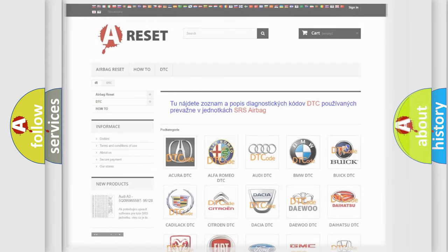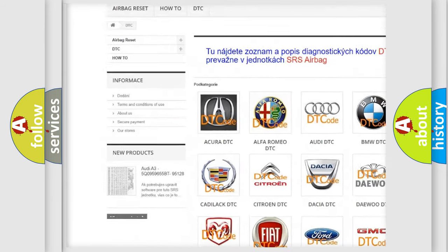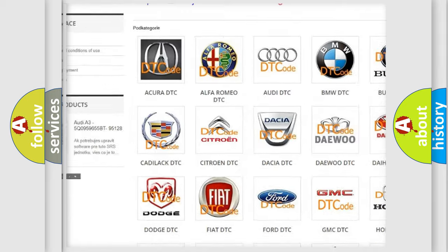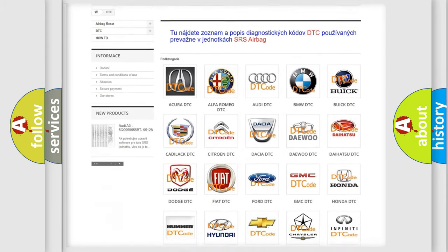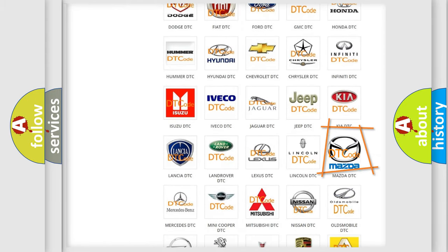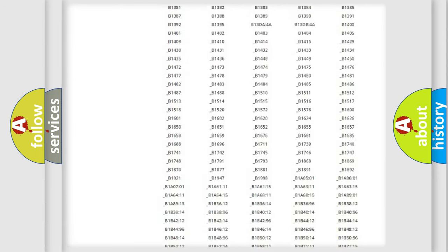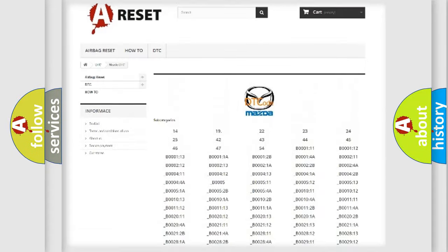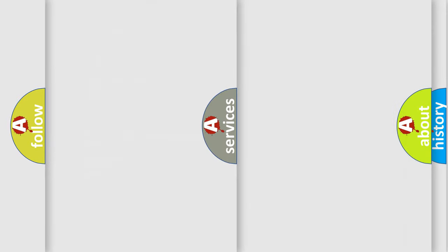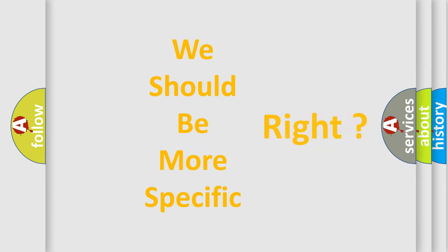Our website airbagreset.sk produces useful videos for you. You do not have to go through the OBD2 protocol anymore to know how to troubleshoot any car breakdown. You will find all the diagnostic codes that can be diagnosed in Mazda vehicles. Also many other useful things. The following demonstration will help you look into the world of software for car control units.